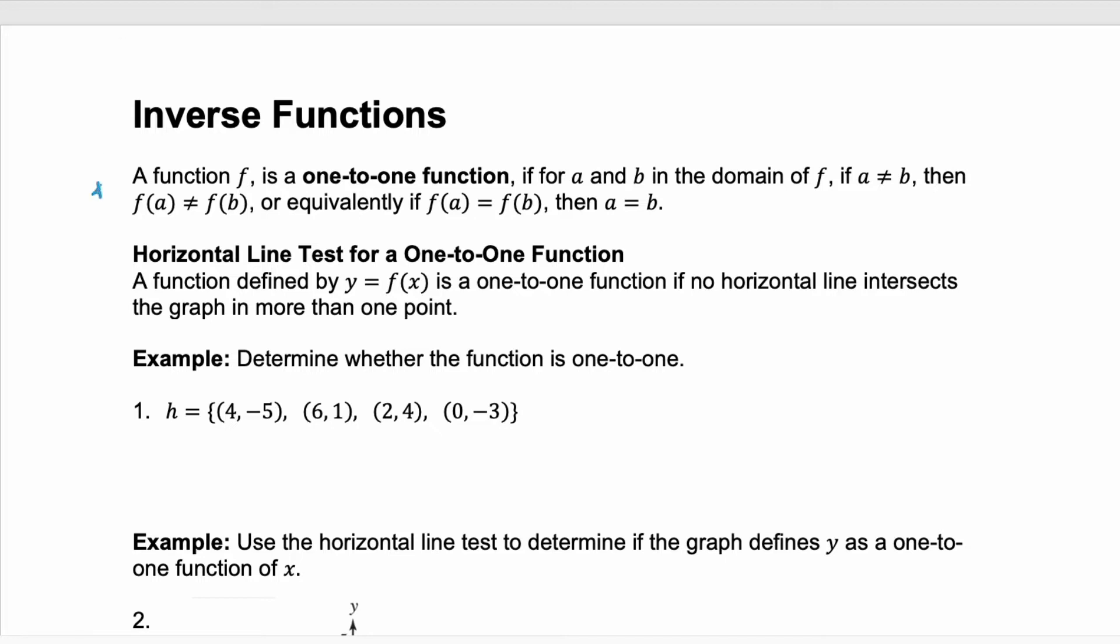Here is the text definition of what it means for a function to be one-to-one. And what this translates to is that each y value in the range is associated with just one x value. So the x values and the y values are one-to-one.